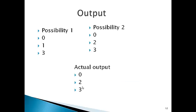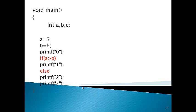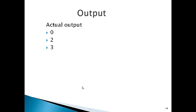Now the condition is changed to a < b, meaning 5 < 6 — yes, true. So if body executes, else does not. Output is 0, 1, and 3. Next condition: a <= b — 5 <= 6, true again. Output is 0, 1, and 3. Next: a > b — 5 > 6, false. Output is 0, 2, and 3. Next: a >= b — 5 >= 6, false. Output is 0, 2, and 3.